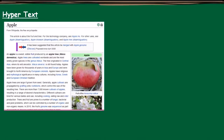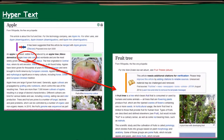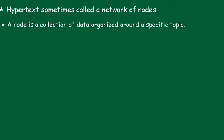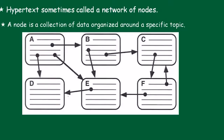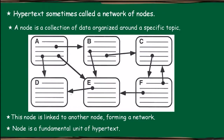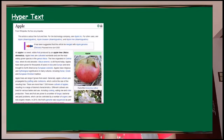When you see a page, we have some nodes — a network of nodes. These links lead you to another page. A node is a collection of data organized around a specific topic, and it is linked to another node forming a network. If you click a word — that word is a node, a hypertext — it leads to another page, and in that page if you click another node, it again leads to another page, forming a network of nodes. Node is the fundamental unit of hypertext.